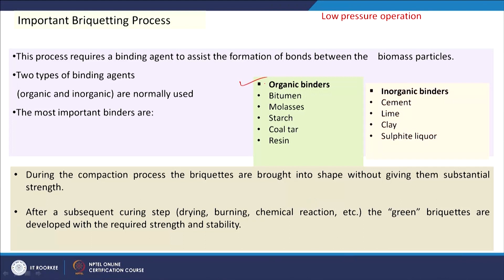The main disadvantage of the screw press is that wear of the screw elevates the cost of spare parts, making operating cost higher. Under low pressure operation, a binder must be added. Biomass and waste are mixed with the binder, an initial shape is given, and then there is a curing time. Organic binders such as bitumen, molasses, starch, coltan, and resin can be used, as well as inorganic binders such as cement, lime, clay, and sulphite liquor.